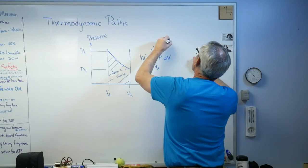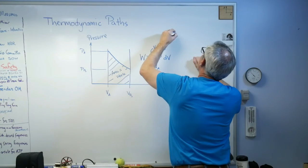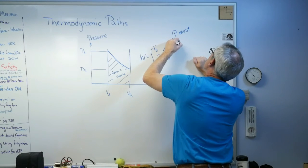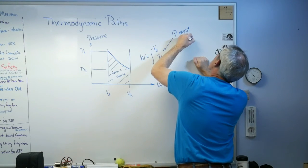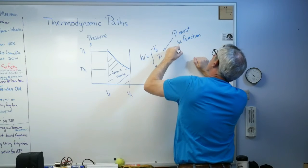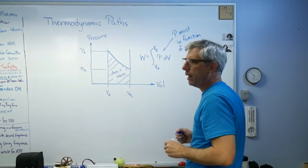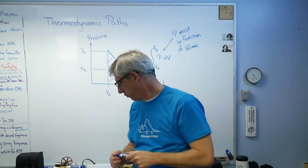P must be a function of volume. Well, how in the world are we going to do that?